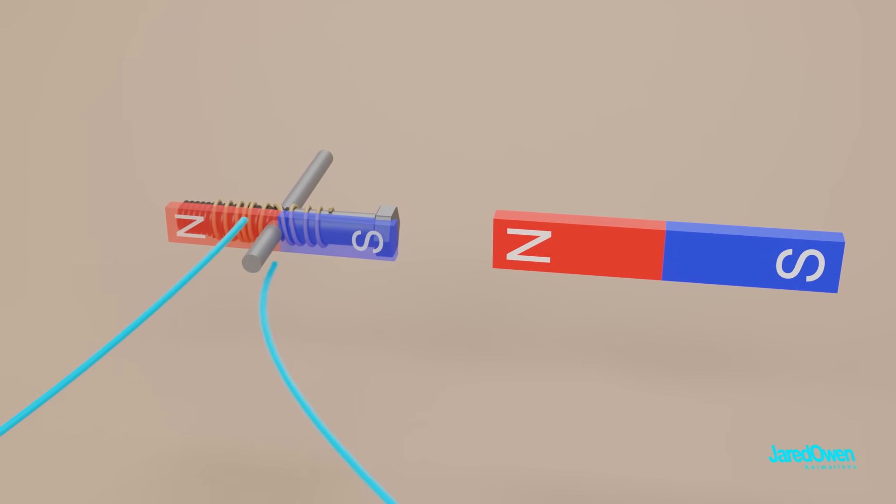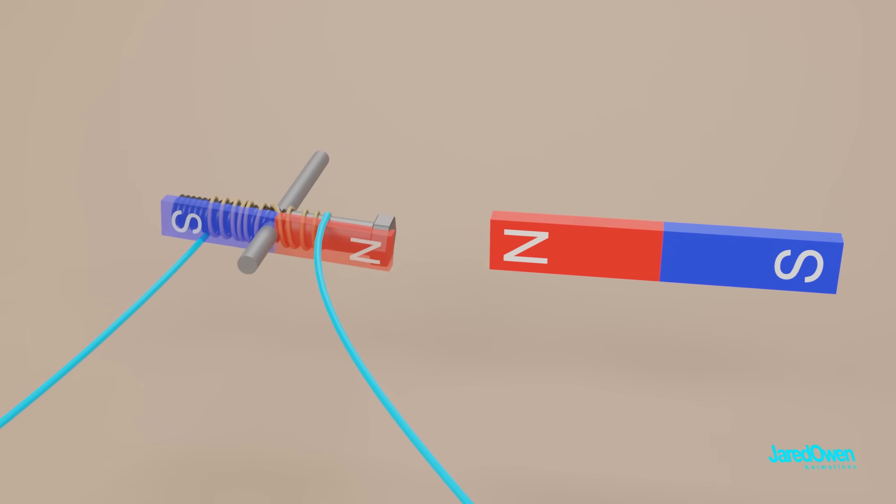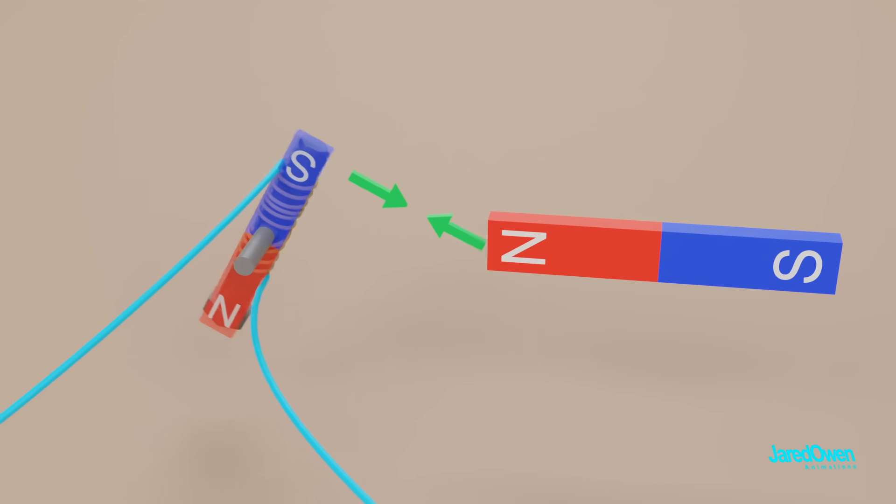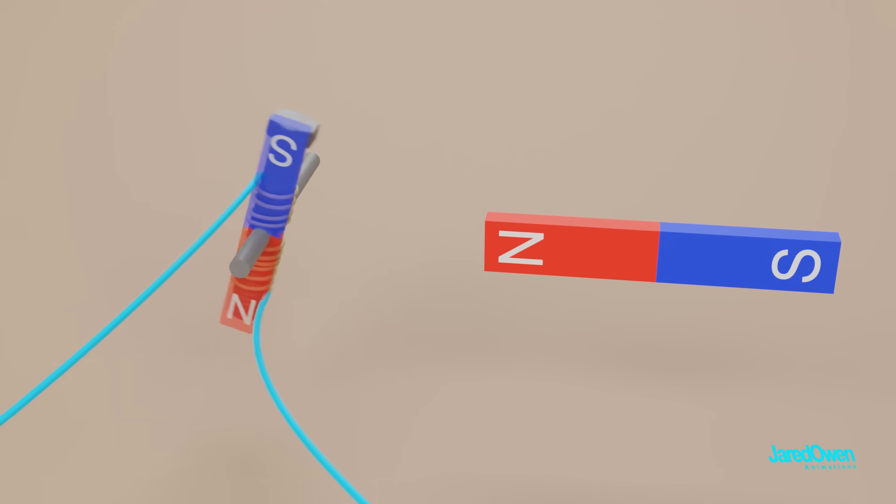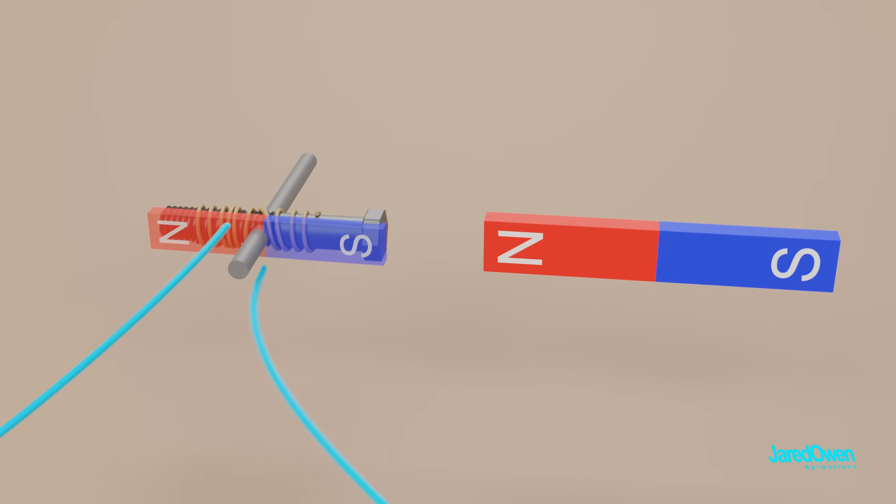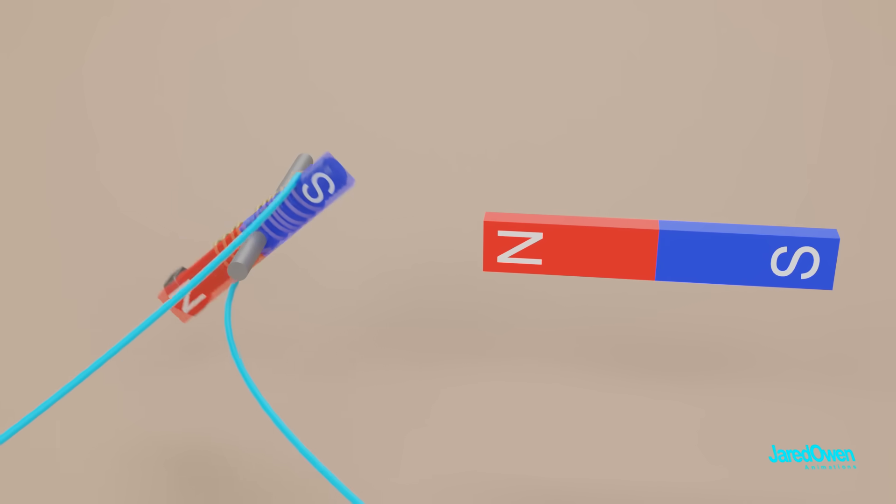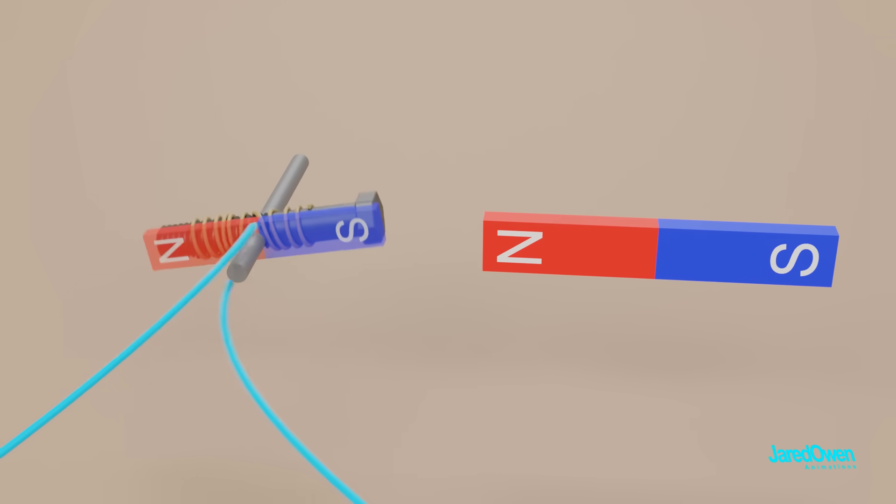Now let's switch the wires to reverse the poles on the electromagnet. The same poles repel, and opposite poles attract. Now reverse the polarity again. Same poles repel, and opposite poles attract. If we keep switching the polarity, our electromagnet will just keep spinning.